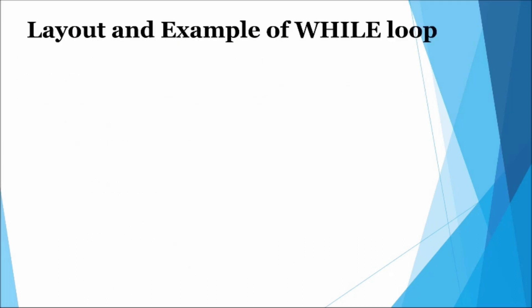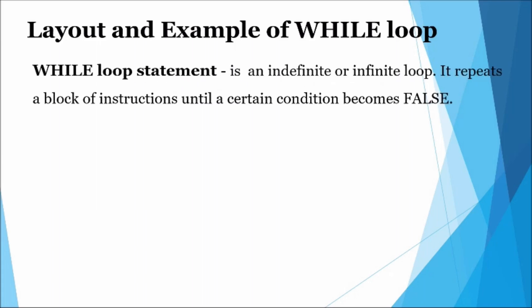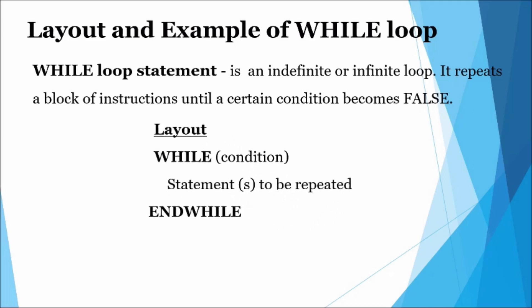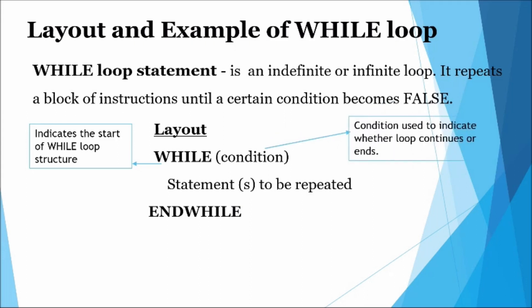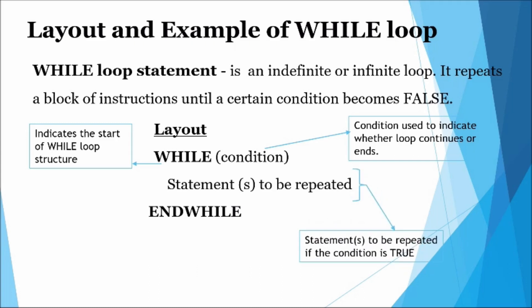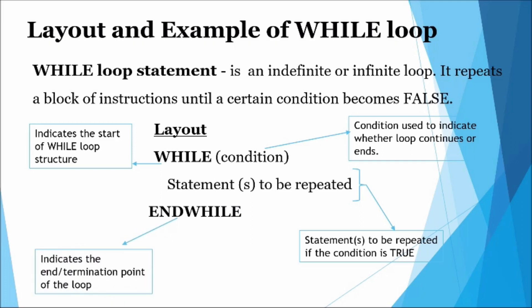While loop statement: a while loop is classified as an indefinite or infinite loop. It repeats a block of instructions until a certain condition becomes false. The layout shows the basic structure of a while loop statement. The keyword 'while' indicates the start of the loop structure. The condition, when evaluated, will indicate whether the loop continues or is terminated. The statements between the 'while' and 'end while' keywords form the loop block or compound statement. These statements will be repeated until the condition becomes false. The 'end while' keyword indicates the termination point of the loop statement.